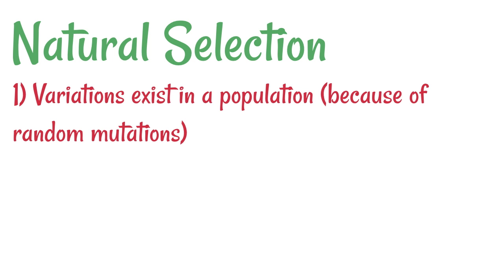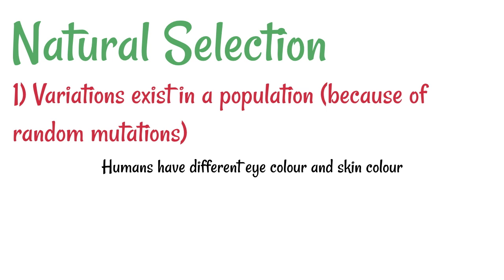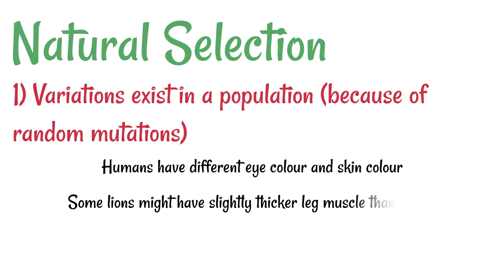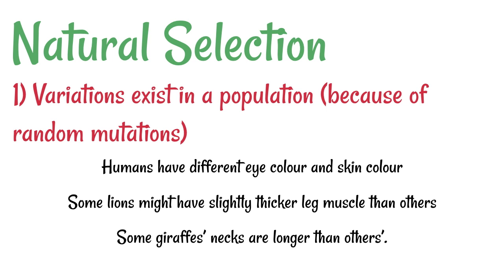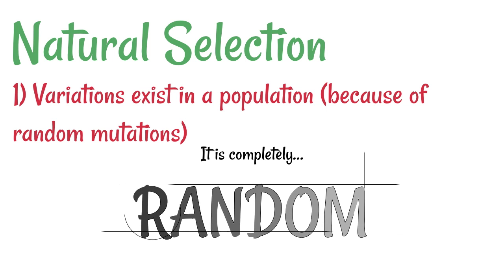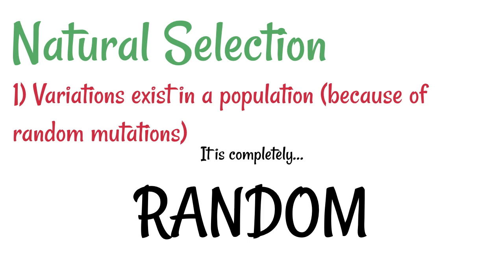The first thing to note is that there is variation within any population — variation which exists as a result of random mutations. Easy examples are things like different eye colour and skin colour amongst humans; we're not all absolutely identical. Similarly, in the animal kingdom, maybe some lions have got slightly thicker leg muscles than others, or some giraffes have got slightly longer necks than others. It's important to recognise that this process is completely random.